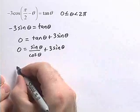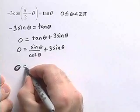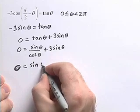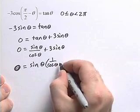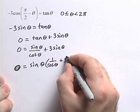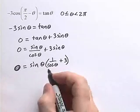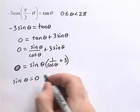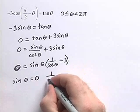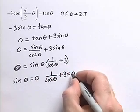Here we can factor a sine theta out. 0 is equal to sine of theta times 1 over cosine theta plus 3. We're going to set each one of these factors equal to 0. So we'll get sine of theta is equal to 0, and we'll get 1 over cosine theta plus 3 is equal to 0.